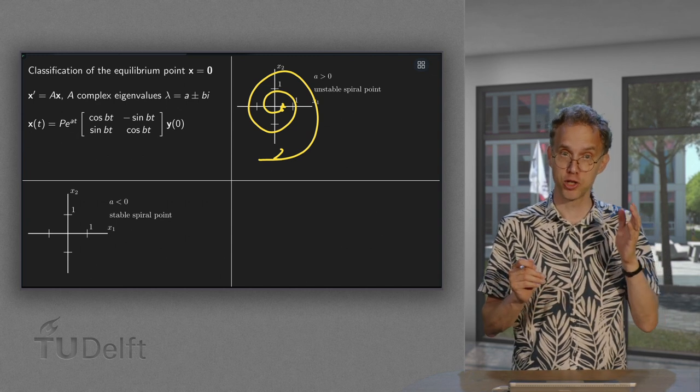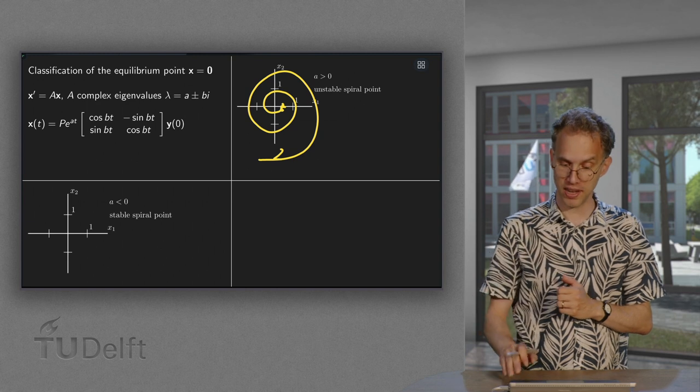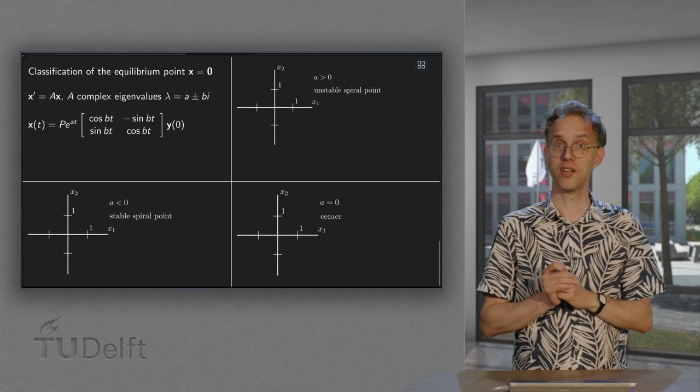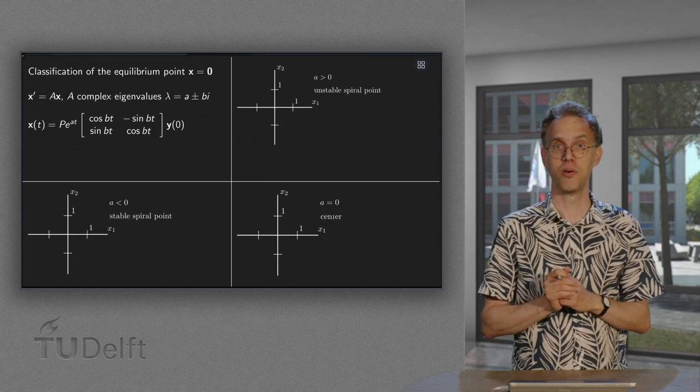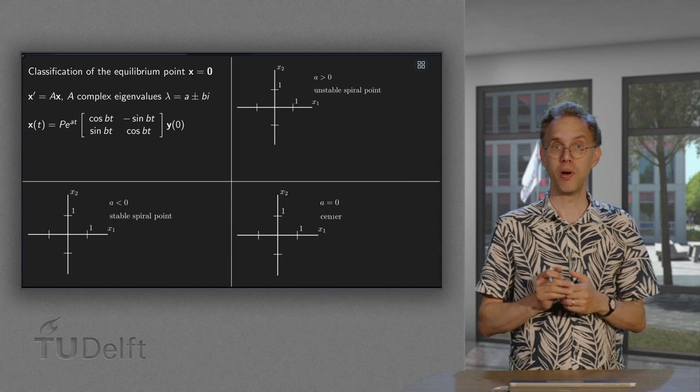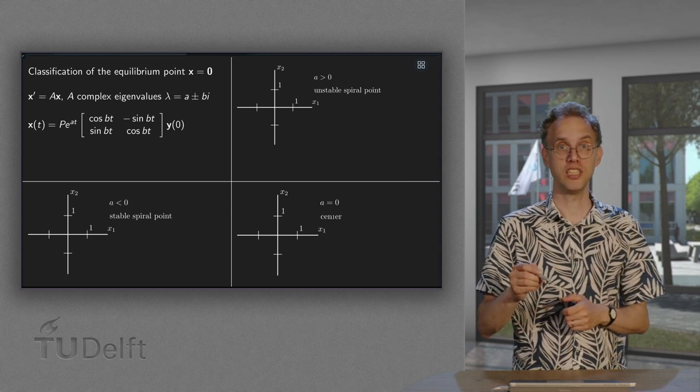Well we have done a smaller than zero, a bigger than zero. Of course we can also have a equals zero. What happens then? Well, e to the power at drops out. We just have a pure rotation.